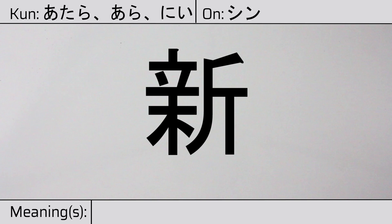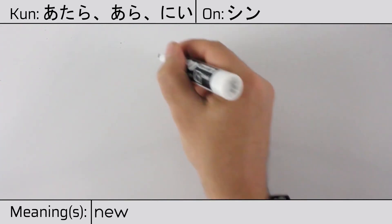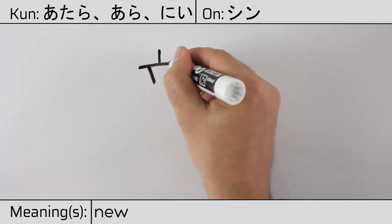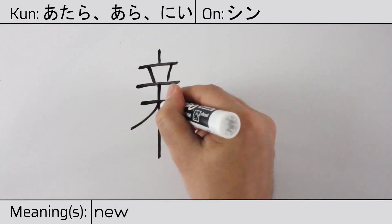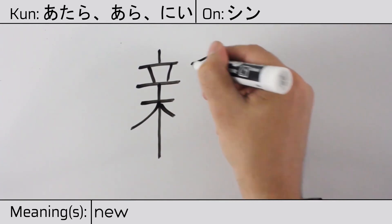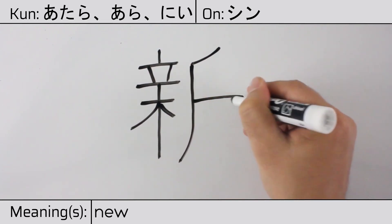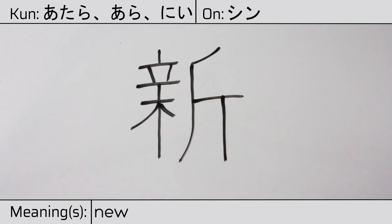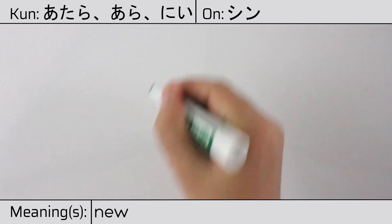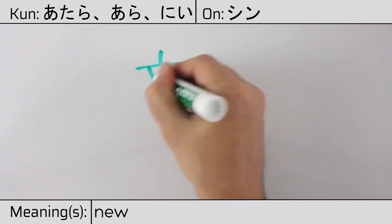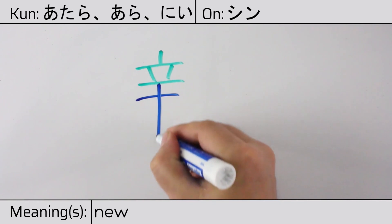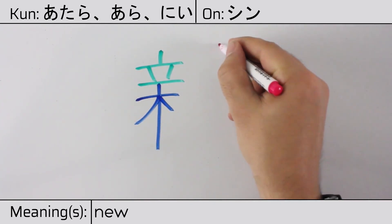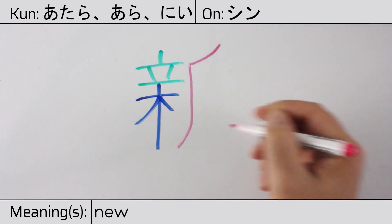This character has the meaning 'new.' Here is the stroke order. This character is made up of the following radicals or parts: kanji tatsu, meaning 'to stand,' followed by ki, or 'tree,' and then the X radical, ono, on the right.